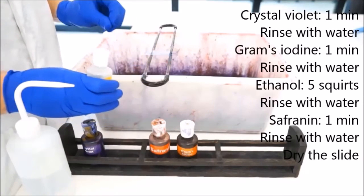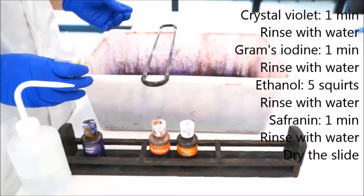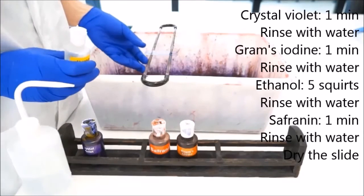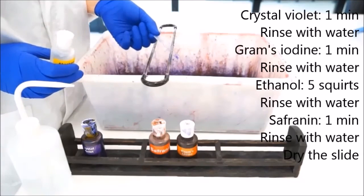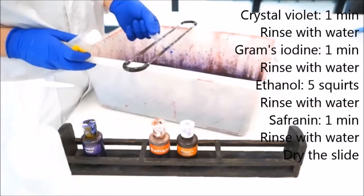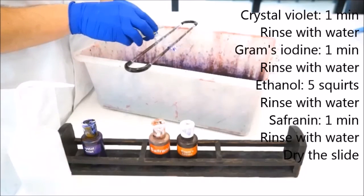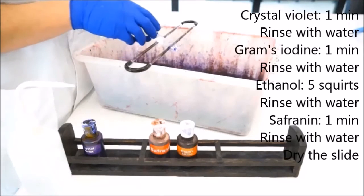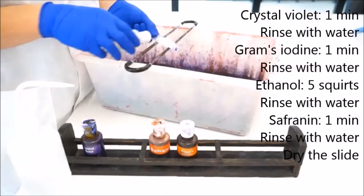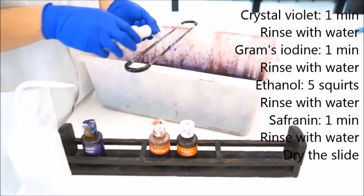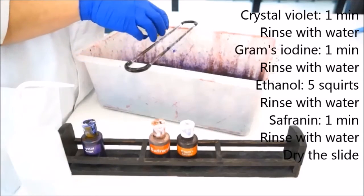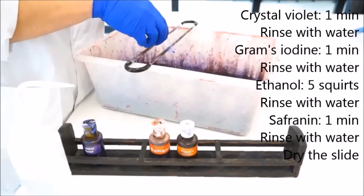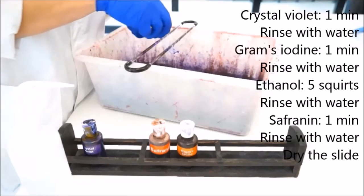Now there are various ways of doing this, but I've found the most successful way is to get your slide and put it at an angle like that and scrape the lid of the ethanol across the slide while squirting and count five times. So we've got one, two, three, four, five.